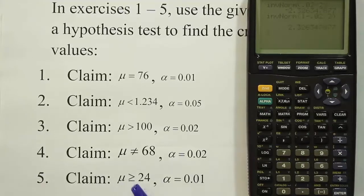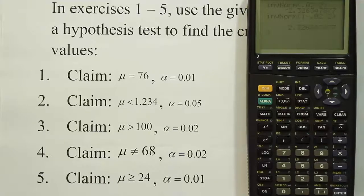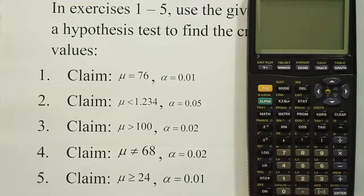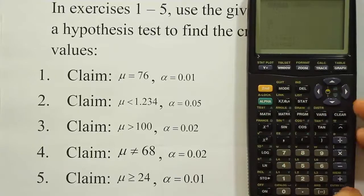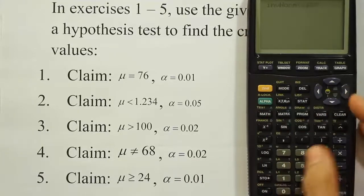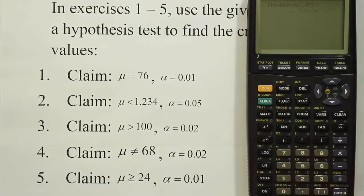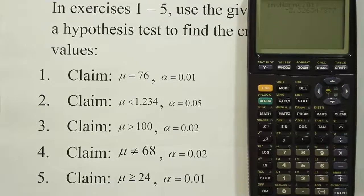The last problem has an equal sign, so it's H0. Therefore HA is less than, making this a left-tailed test. We enter just the alpha value 0.01 into inverse norm: second → vars → option 3 → 0.01 → close parenthesis → enter. The result is negative 2.326. Those are our five results, and that's how to use the graphing calculator to find critical z-values.